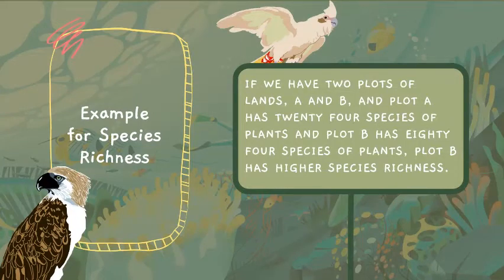For example, if we have two plots of plants, A and B, and plot A has 24 species while plot B has 84 species, then plot B has higher species richness. Species richness is simply about the number of species currently residing or living in a specific region or place.